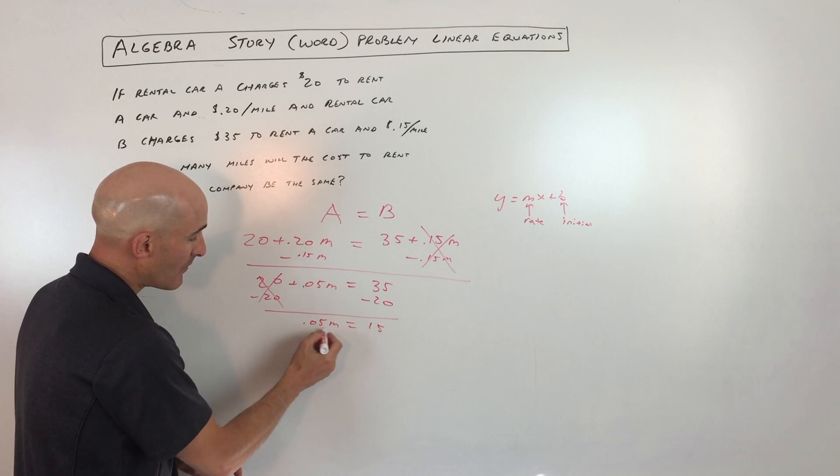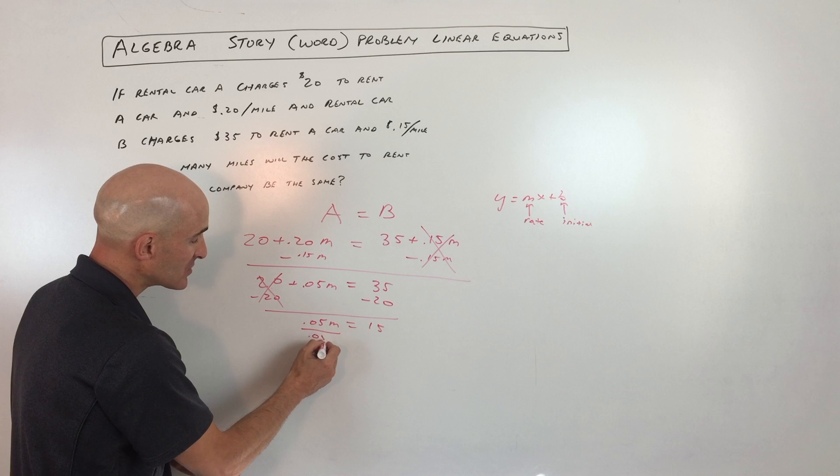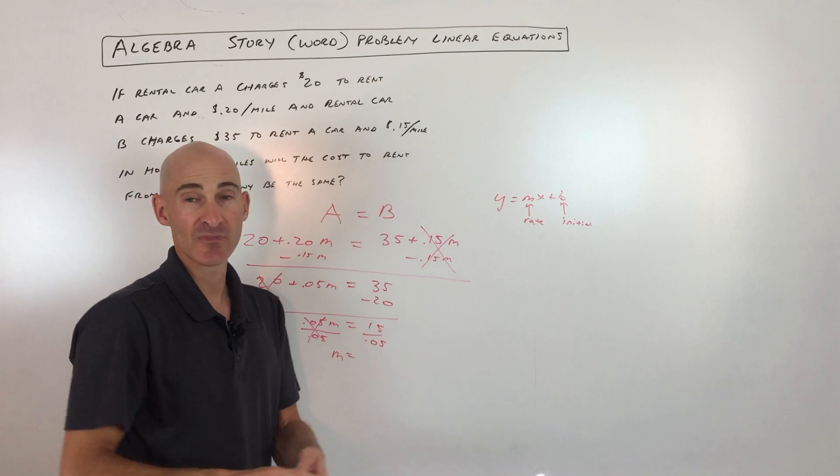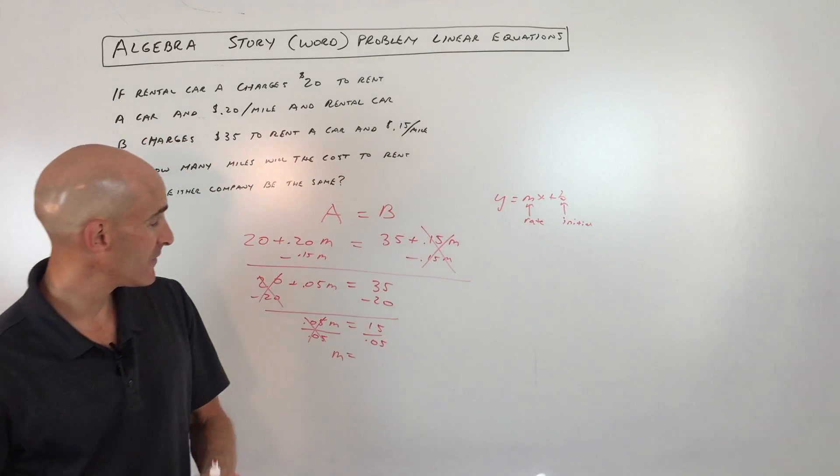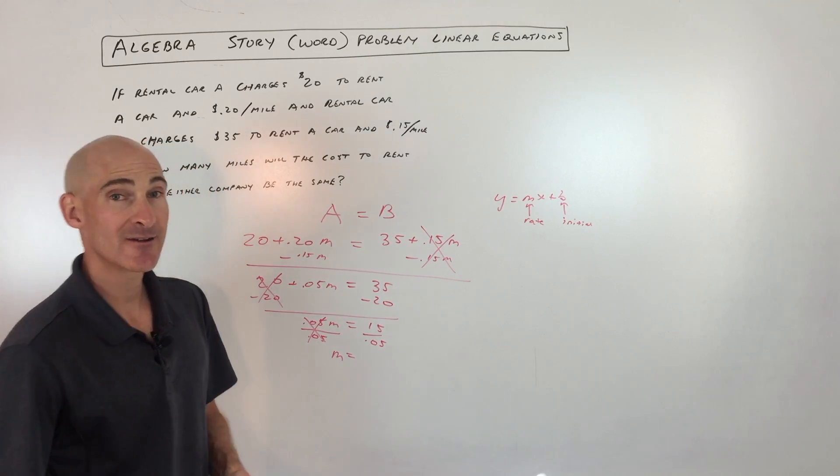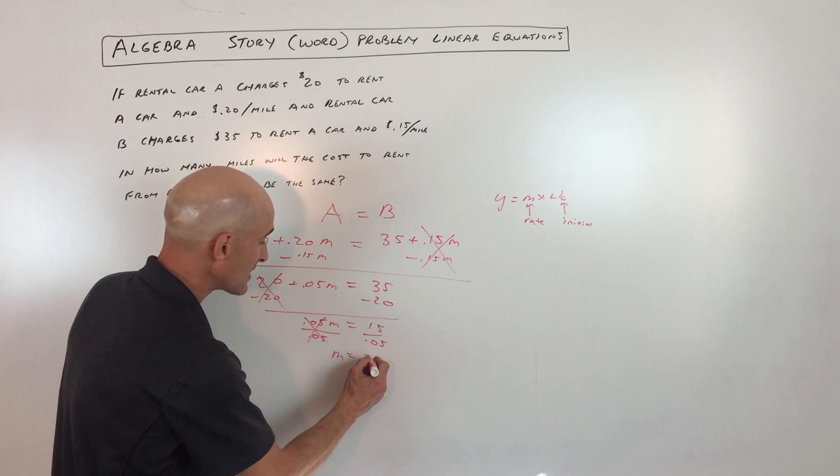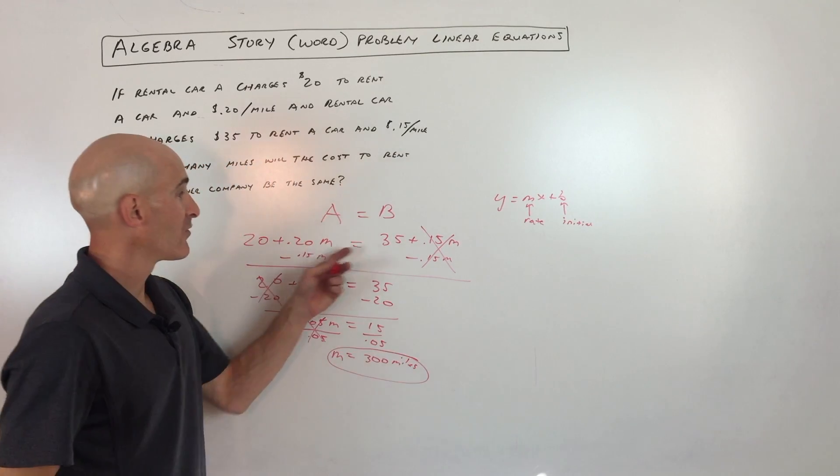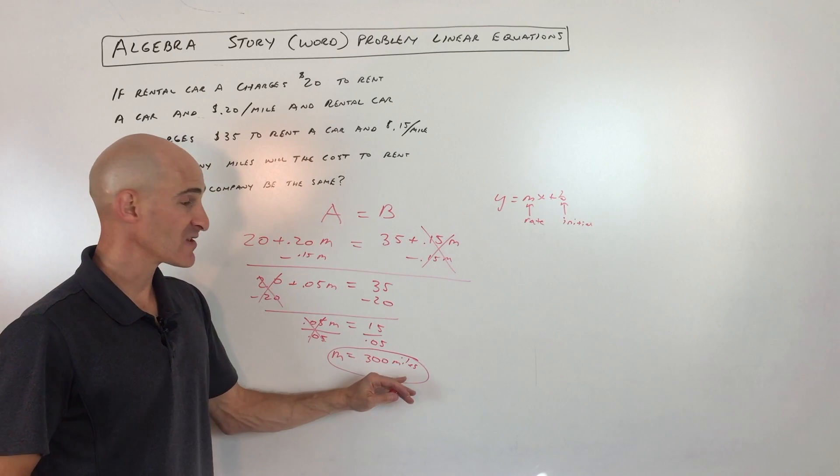Now we want to get m by itself. The opposite of multiplying by 0.05 is to divide both sides by 0.05. And m equals, let's see, let's go to our calculators. It's 15 divided by 0.05, 300. So 300 miles is how long it's going to take until the two costs renting from either company A or company B are going to be the same.